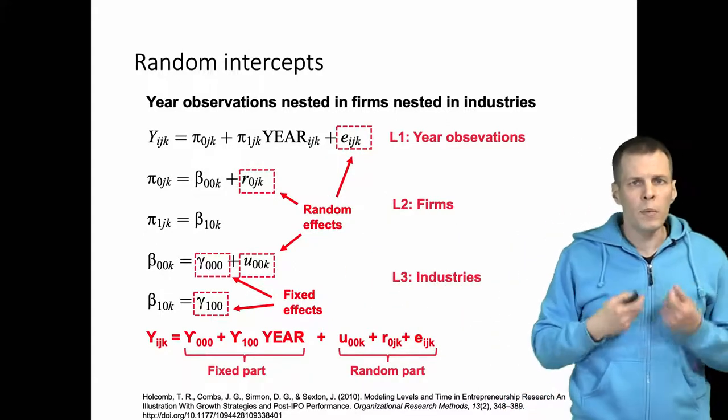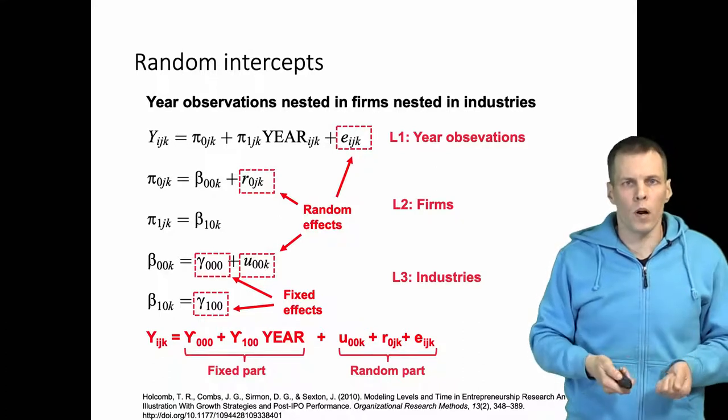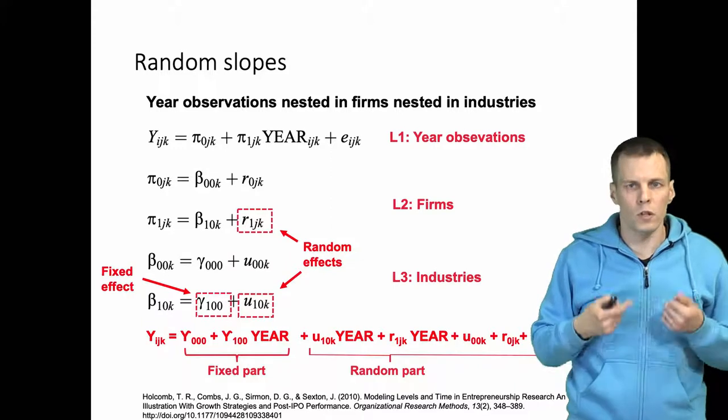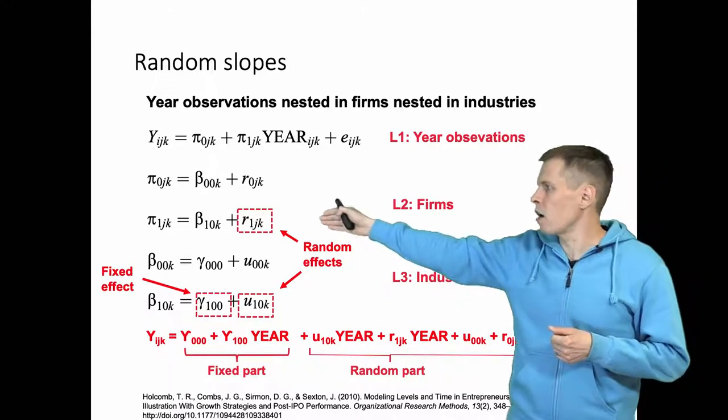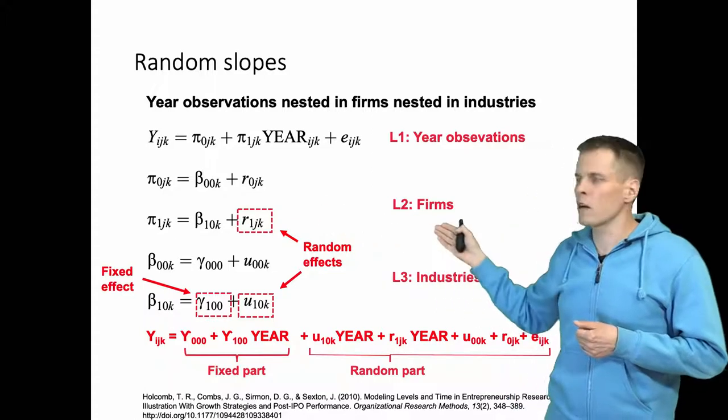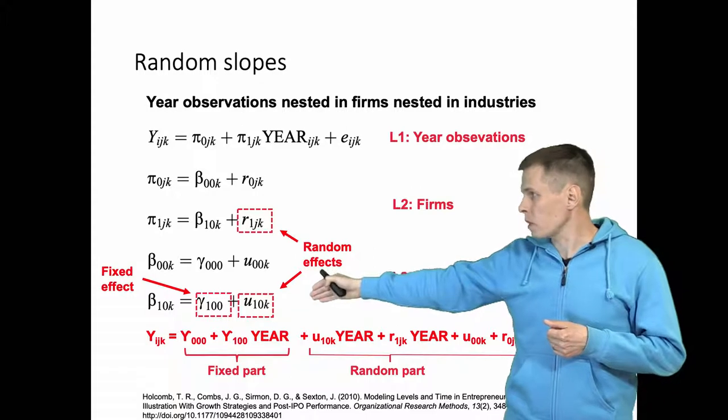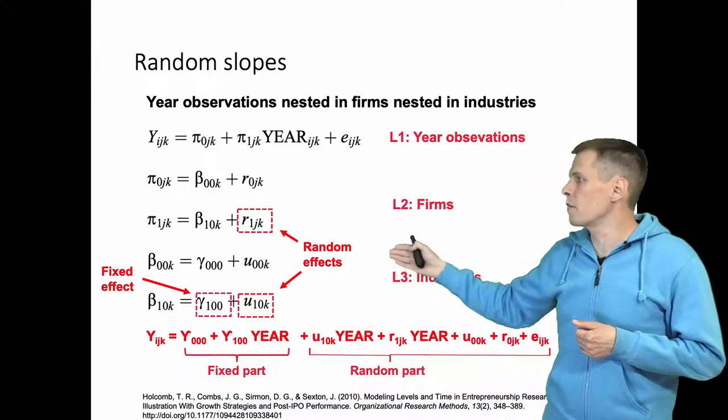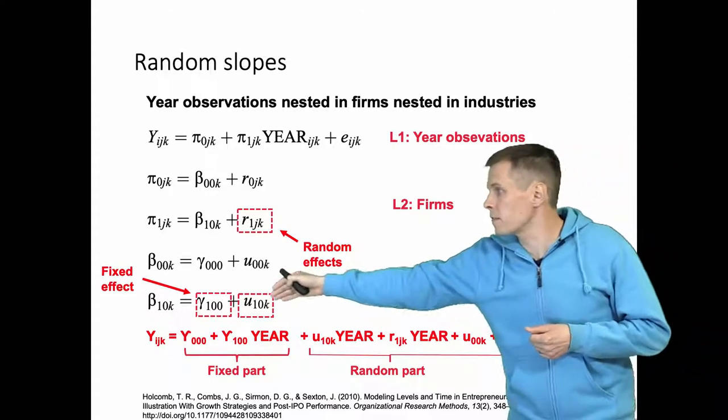When we expand this to be a full random slope model, we add random effects for the slopes as well. We add R1JK, which is the random slope on firm level, and U10K, which is the random effect or random slope on the industry level, and we still have the fixed effect.